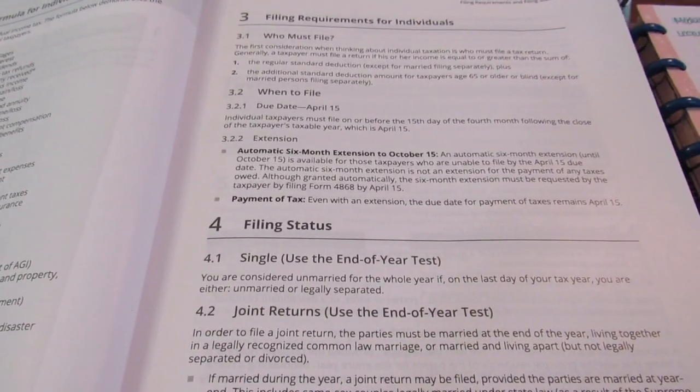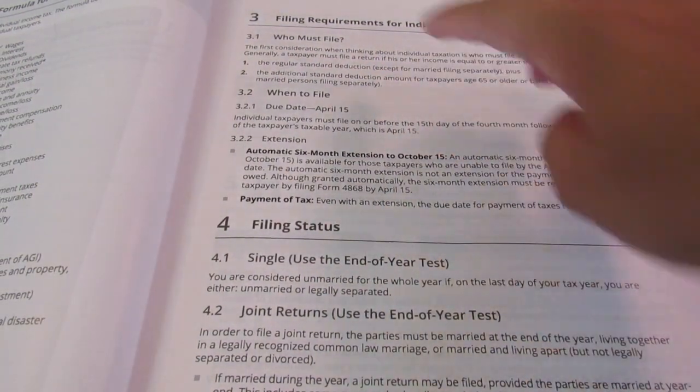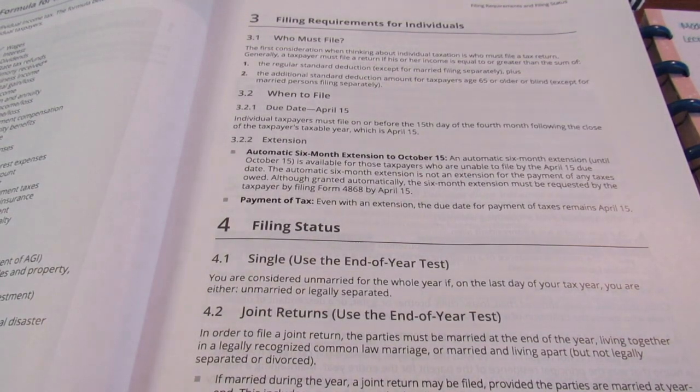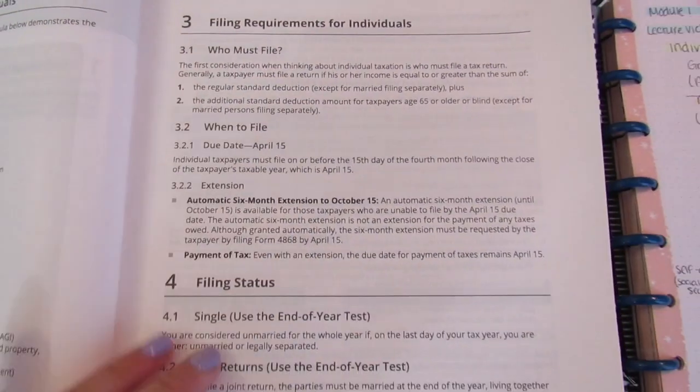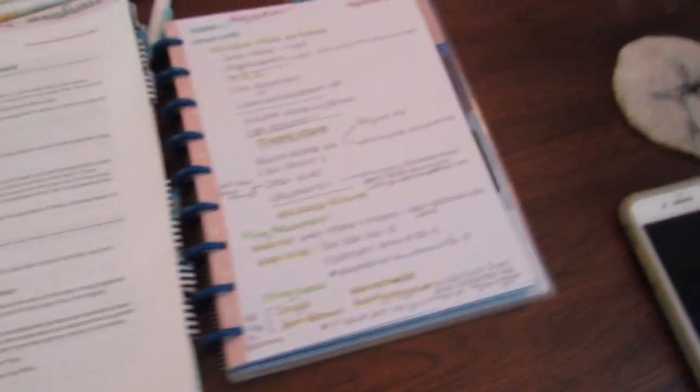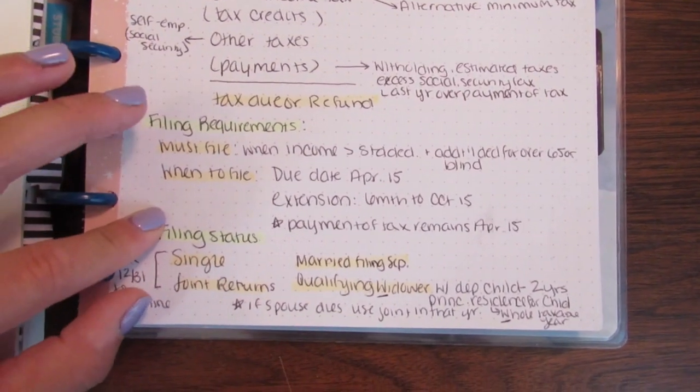Now let's go to the filing requirements. Filing requirements would be in yellow and then all of these little headings that you may see are going to be in orange. So like who must file, when to file, extensions, filing status again would be a yellow and then these two would be orange.